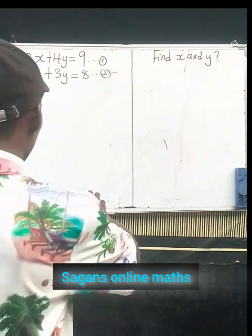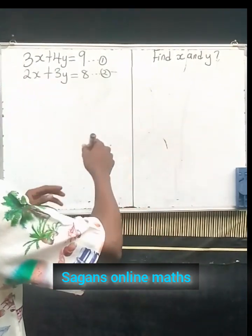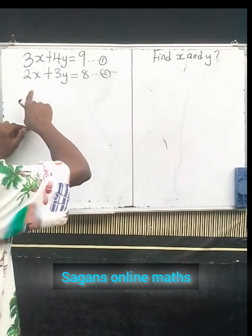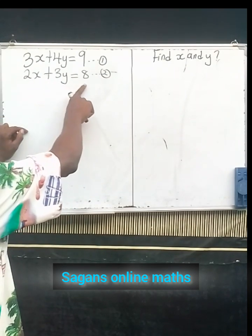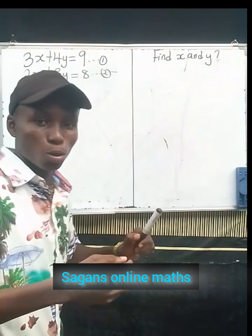Hello friends, welcome once again to Sagans Online Maths. Let's solve this very quickly. We're given that 3x + 4y = 9, which is equation 1, and 2x + 3y = 8, which is equation 2. We are asked to find the value of x and y.